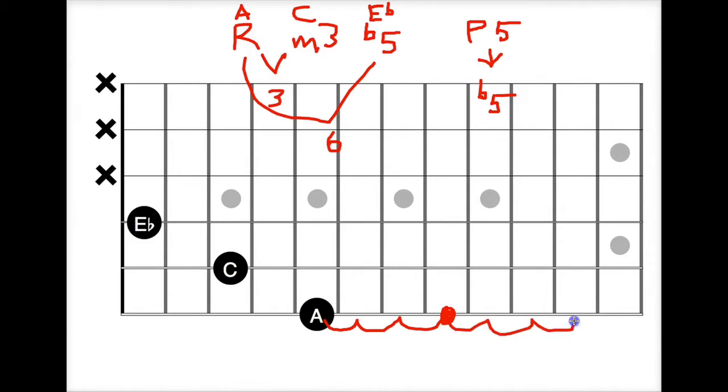So we go up another one, two, three right there, and that is our E flat. So we've got A, C, E flat right there.